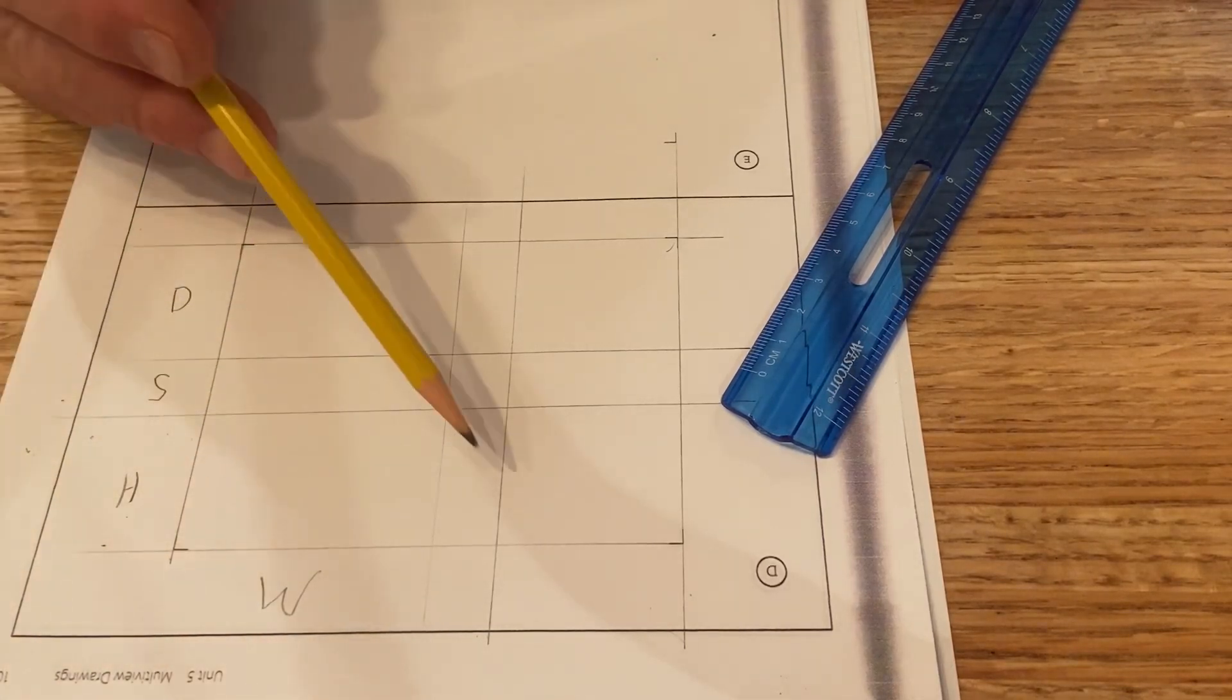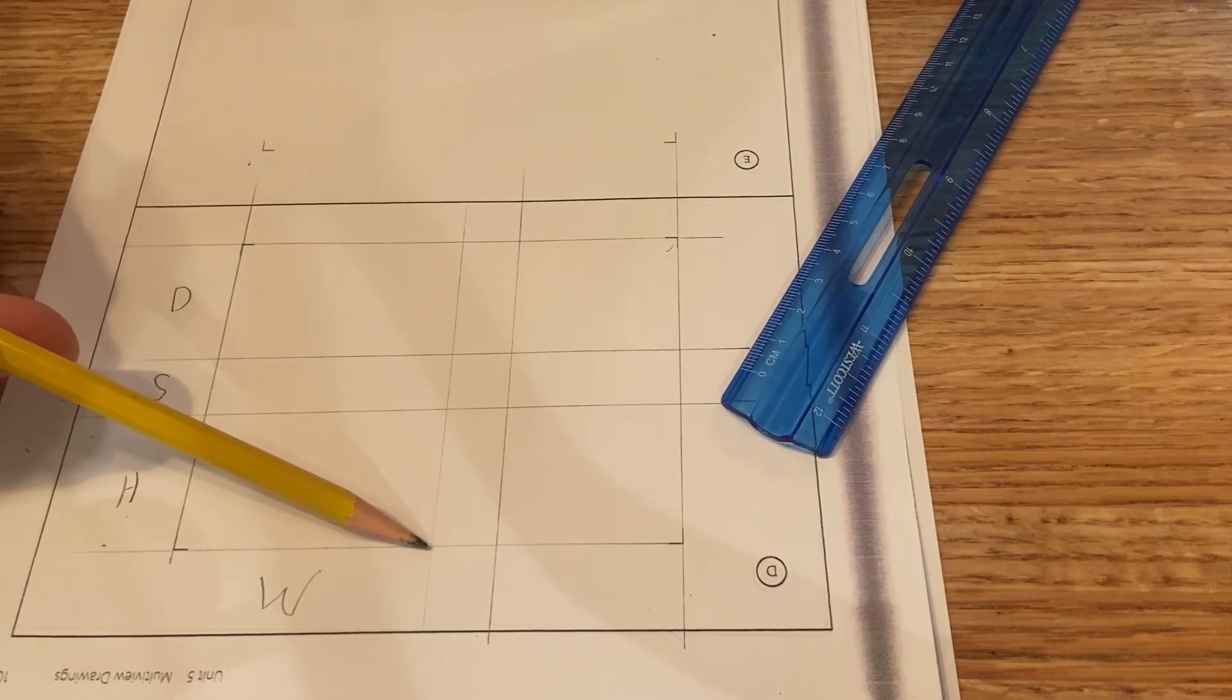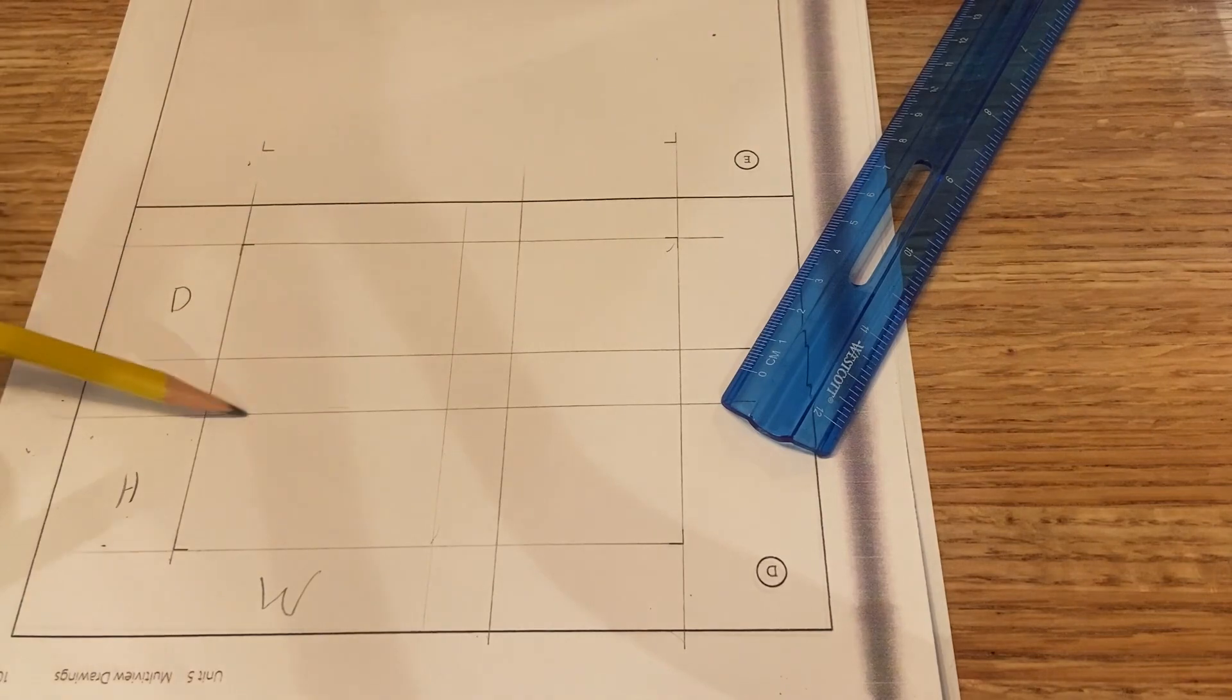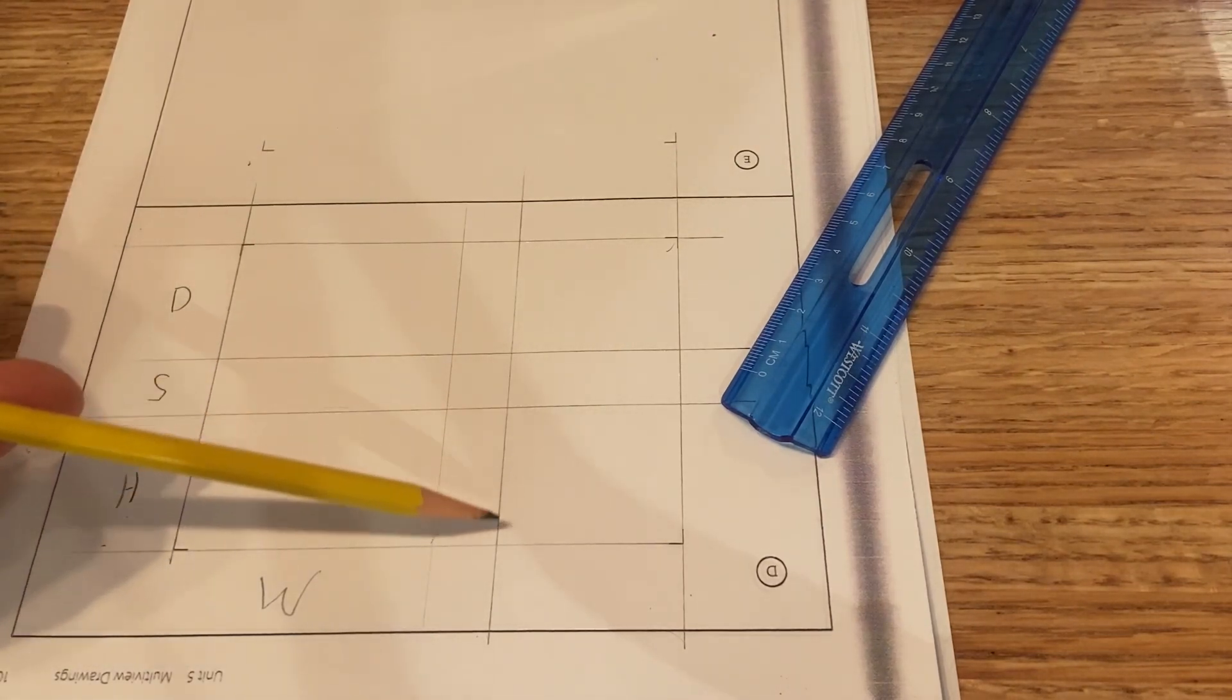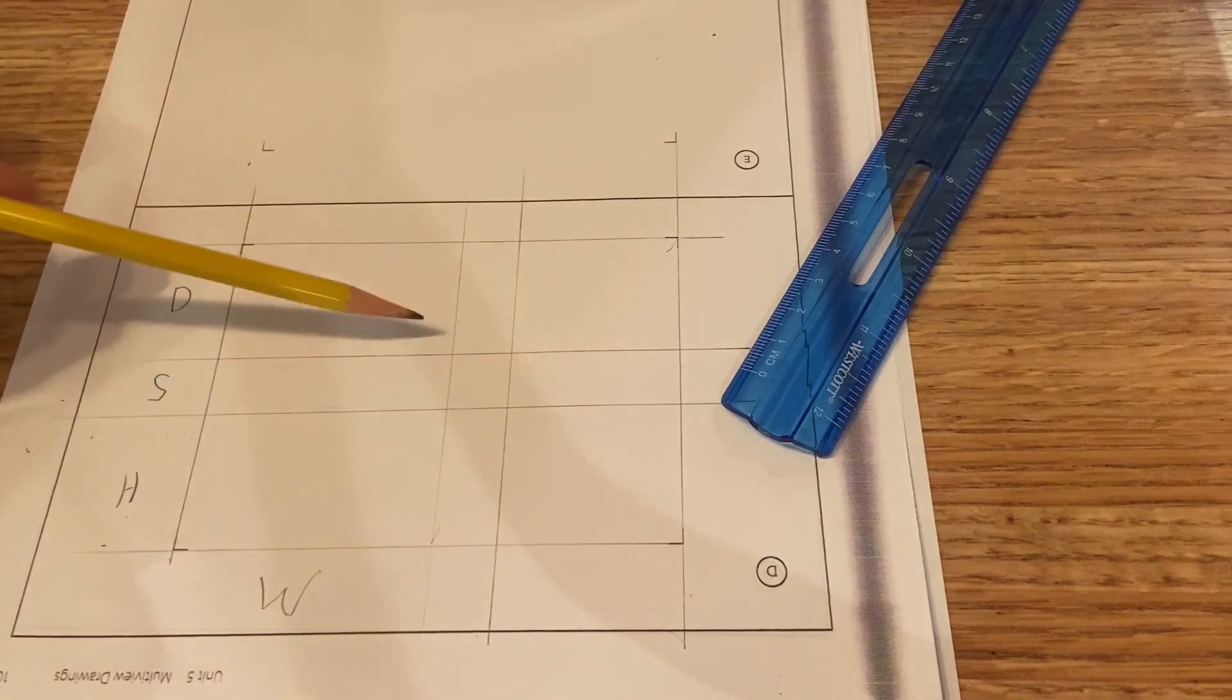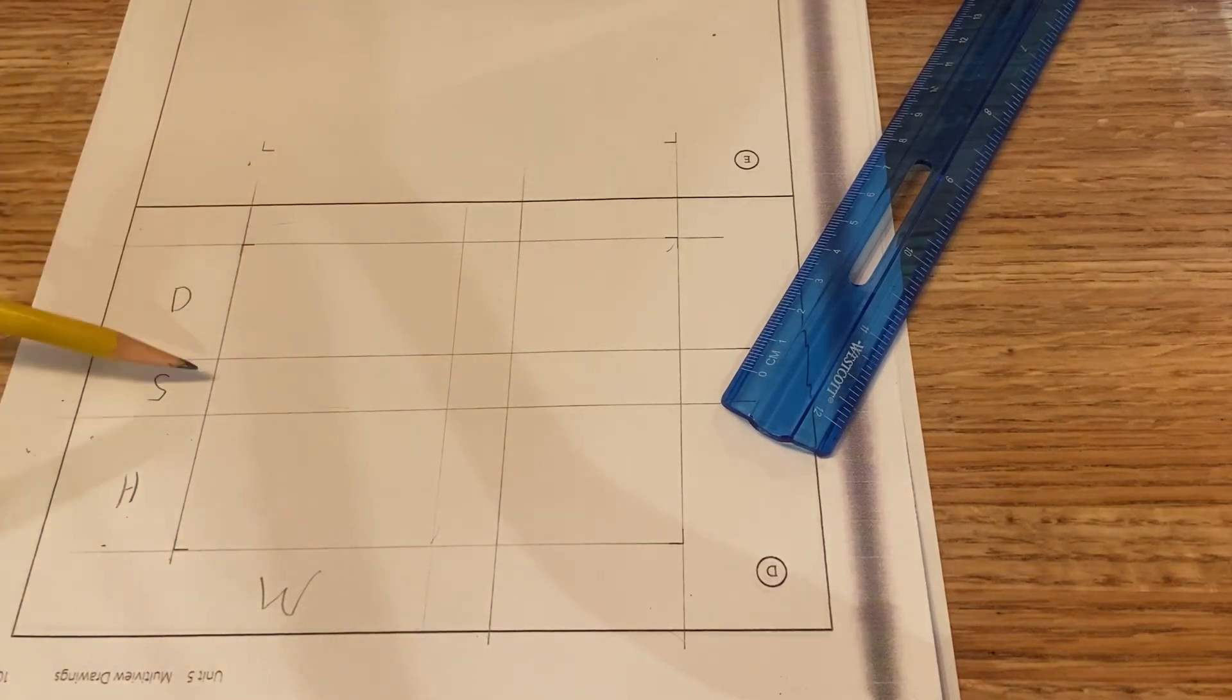Now again, maintain and understand what we're doing with these construction lines is blocking these in. And so our front view is going to be right here. Our side view is going to be right here. And then our top view will be right here.